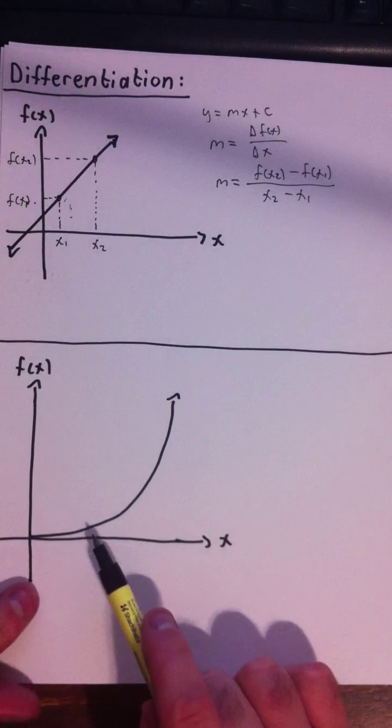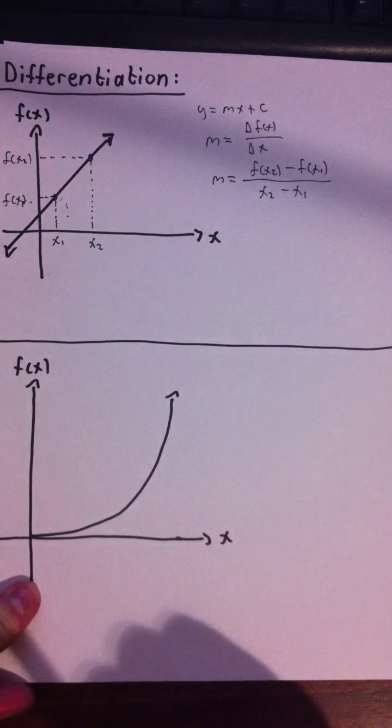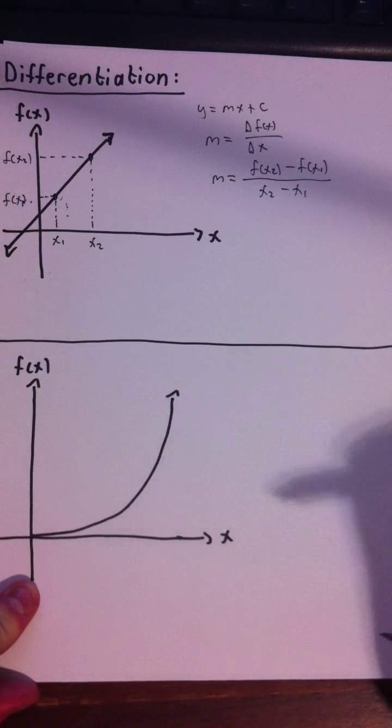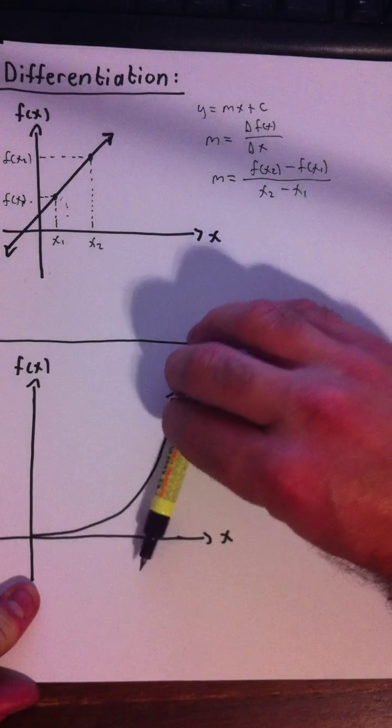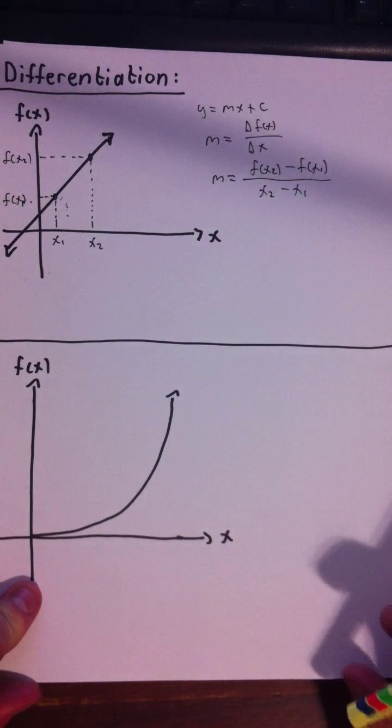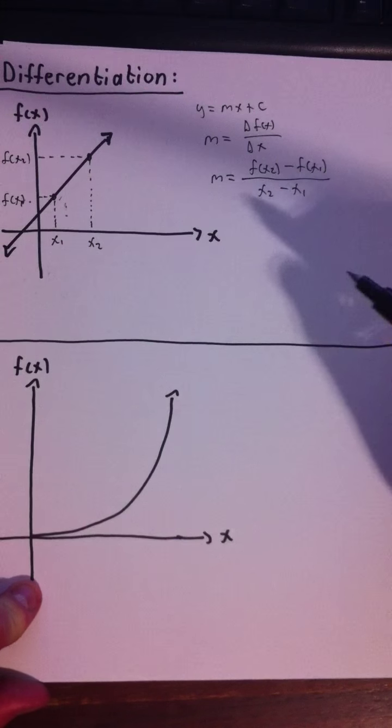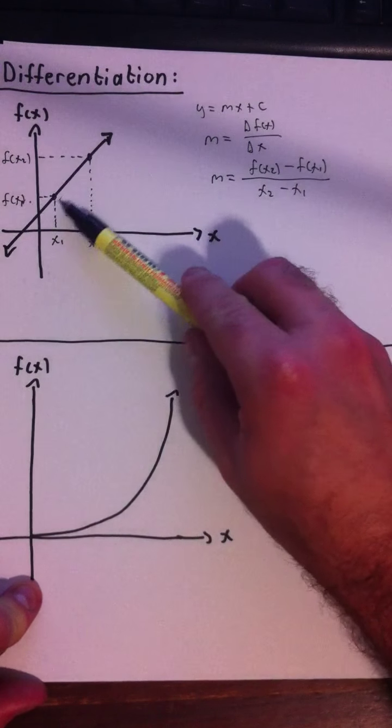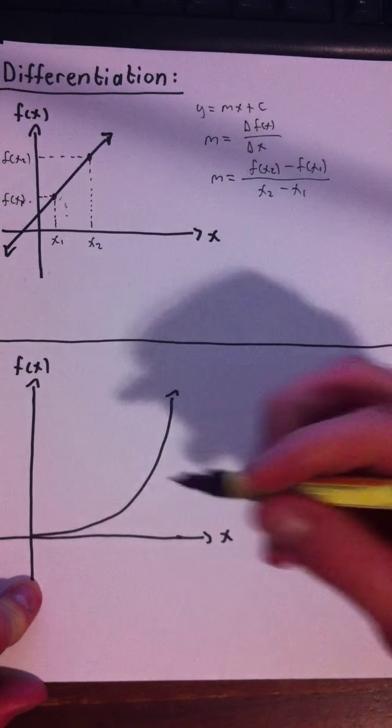But now what if we have some curve like this, something that isn't a straight line? How do we find the gradient of this? Because we see the gradient will change. Obviously it's a lot steeper here than it is over here. Well, we can approximate it by using the same method as this.